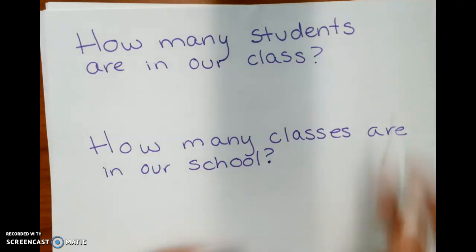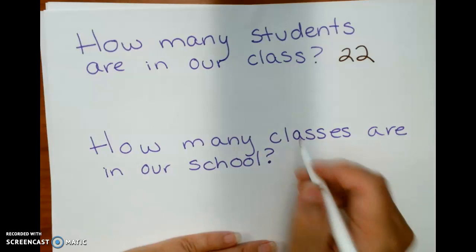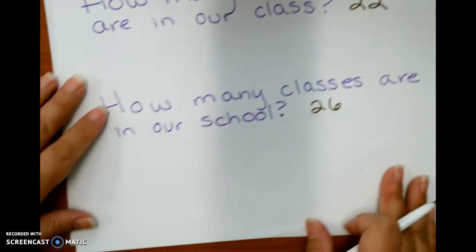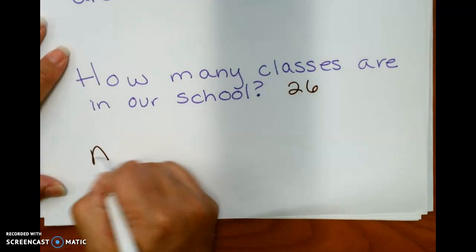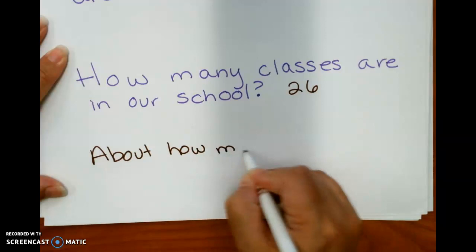There are 22 students in our class. There are 26 classes in the school. So to find out about how many students are in the school, we're going to multiply those two numbers.